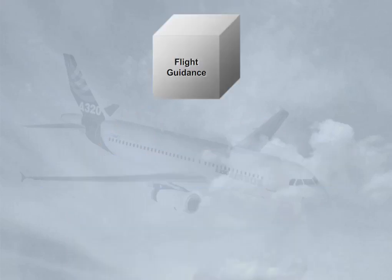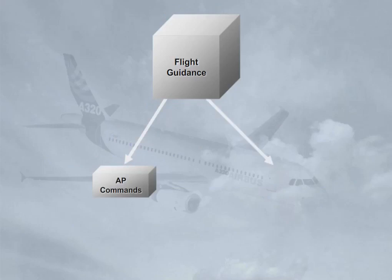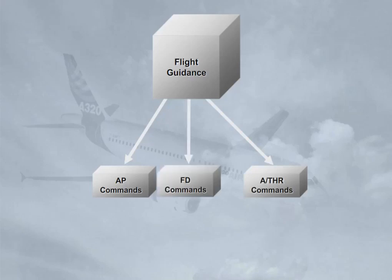The flight guidance part of the FMGS provides autopilot commands to automatically control pitch, roll, and yaw. Autothrust commands to automatically control thrust. And flight director commands for the pilot to control pitch, roll, and yaw.